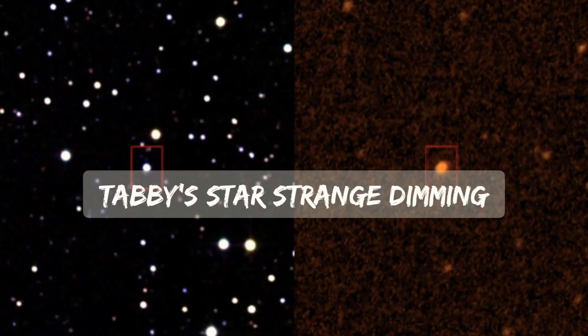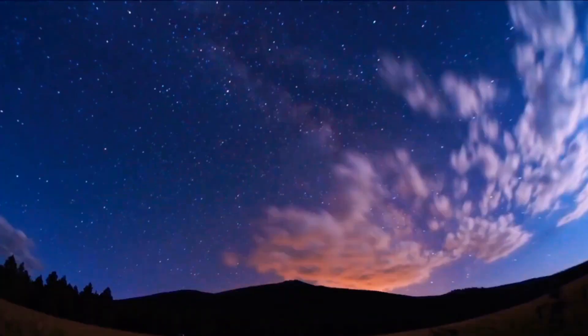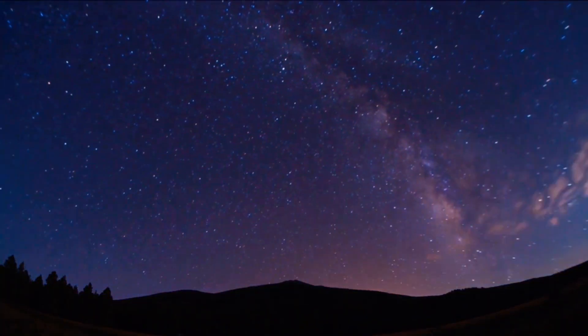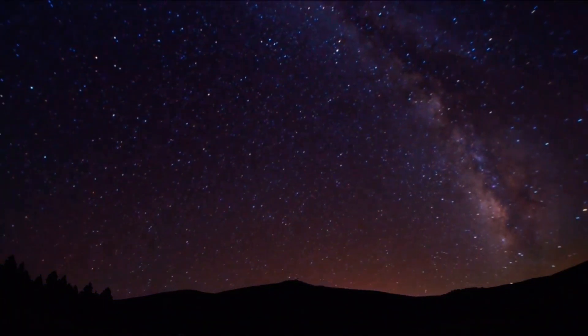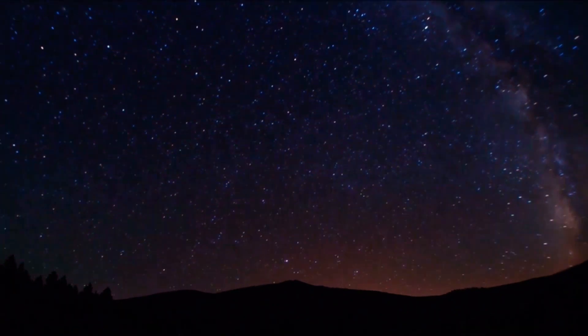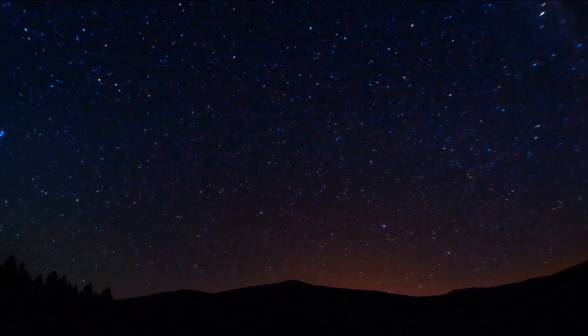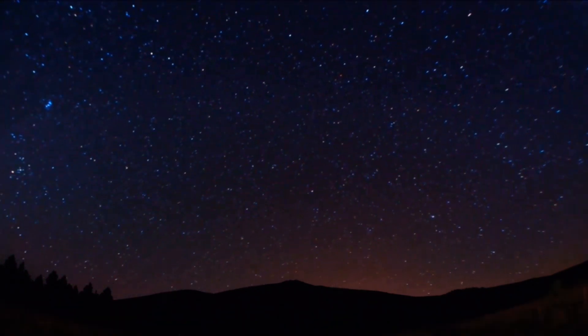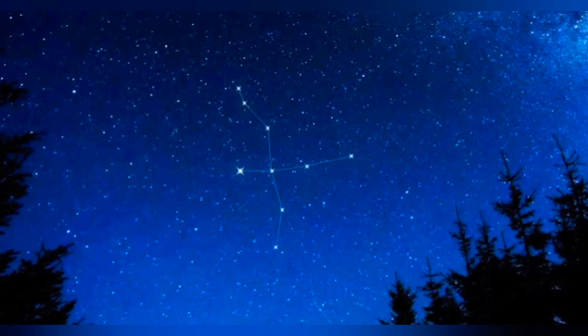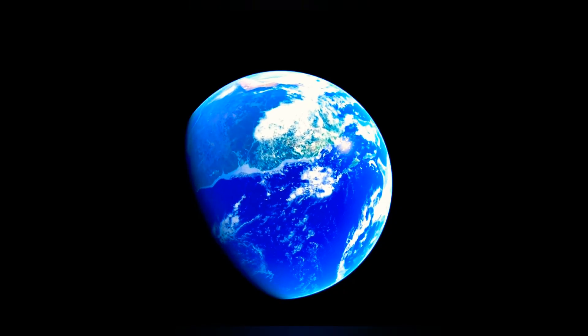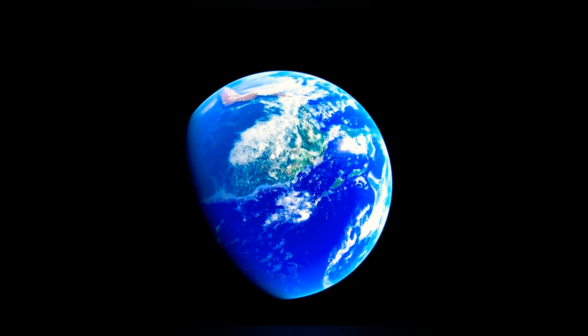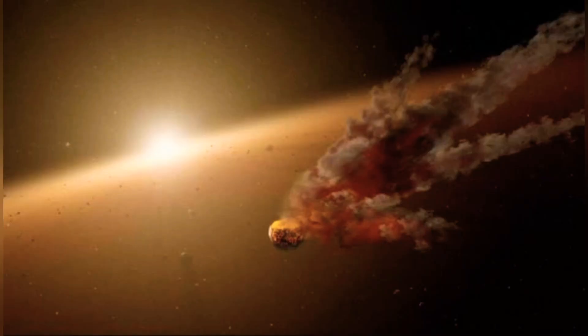Strange dimming of Tabby's star. Tabby's star, also known as Boyajian star, WTF star, and designated KIC 8462852 in the Kepler input catalogue, an F-type main sequence star in the constellation Cygnus, approximately 1,470 light-years away from Earth.